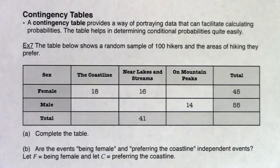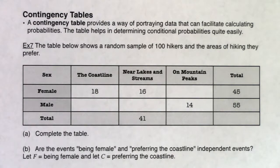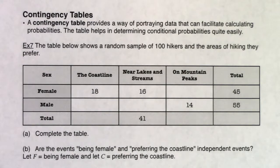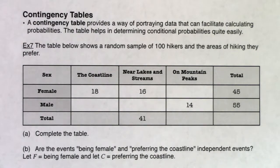Let's take a look at our first type of problem. We've got a contingency table. A contingency table provides a way of portraying data that can facilitate calculating probabilities. The table helps in determining conditional probabilities quite easily. I'm going to read through the next example and ask my favorite question: what is the variable, or actually in this case variables, that we're keeping track of?